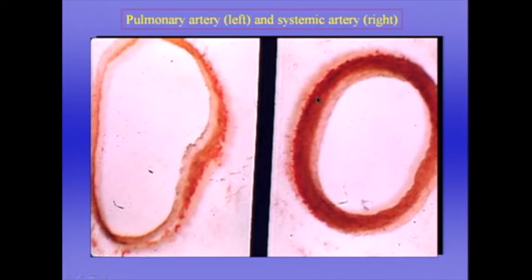Why the difference? Because the pulmonary vascular system is a very low pressure system. The pressures in the pulmonary artery are only about an eighth or so of those in the large systemic arteries, and so there's a very big difference between the two.